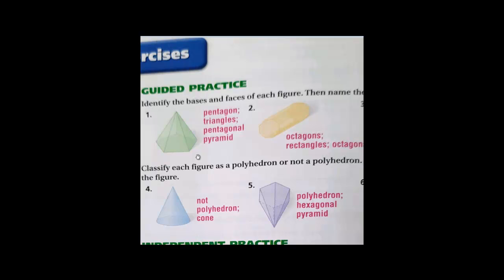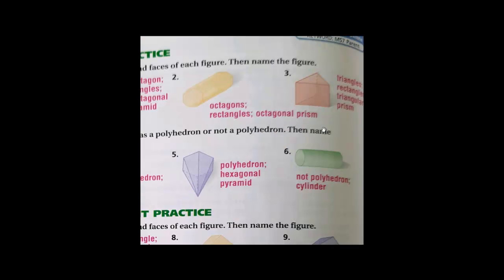Let's see the second one. Count how many sides: one, two, three, four, five, six, seven, eight — eight sides means it's an octagon, and the faces are rectangles, so we call it an octagonal prism. Next, we have a triangular base — two triangles are the bases and the faces are rectangles — so it will be a triangular prism.